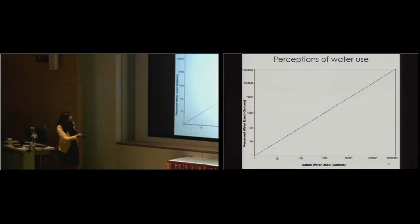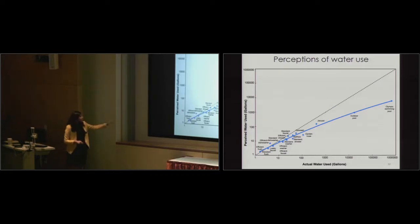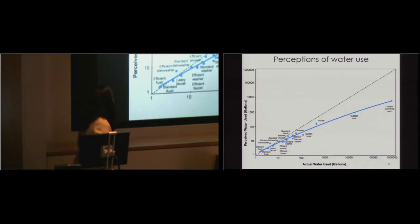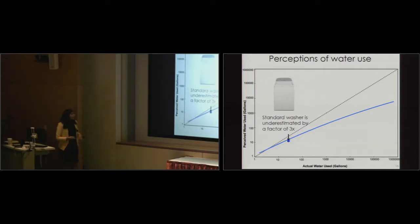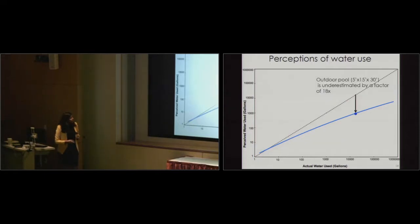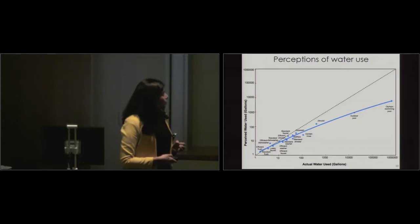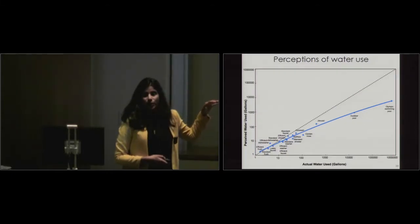So over here you have perceived water use in gallons on your y-axis and actual water use in gallons on your x-axis. Data that lies along the diagonal means perceptions match reality, okay? So this is what your curve looks like. You have everything from efficient flush, standard flush, leaky faucets, garden hoses, jacuzzis, outdoor pools. What is the general trend? It's underestimation, right? Most of the data points are below the diagonal. So let me walk you through some specific examples. So an efficient dishwasher is actually overestimated by a factor of 1.7. So what that means is people think it uses 7.3 gallons, but it actually uses 4.3. Standard washer is underestimated by a factor of 3. So people think it uses 14 gallons when it actually uses 40.